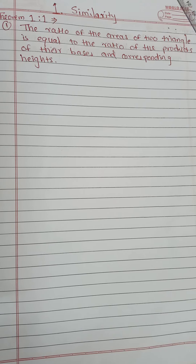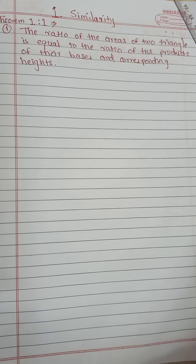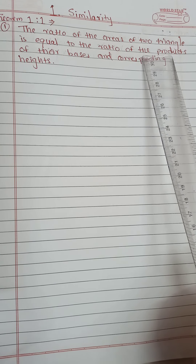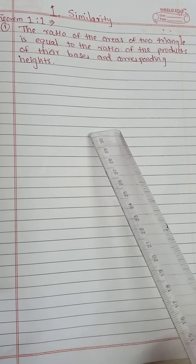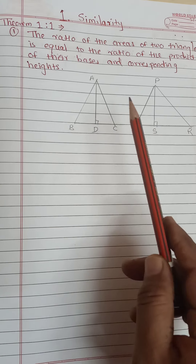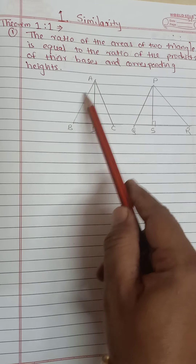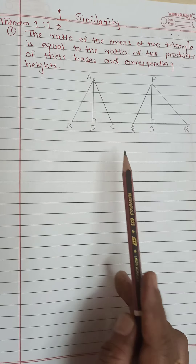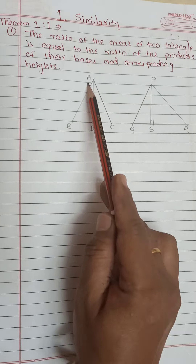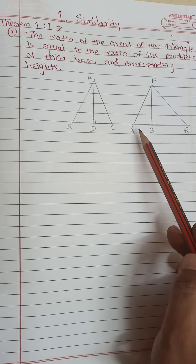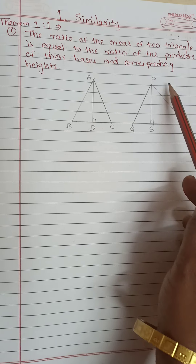Here we have to find out the ratio of the areas of two triangles, so first we will draw two triangles. I have drawn two triangles: triangle ABC and triangle PQR. Triangle ABC has base BC and height AD, and triangle PQR has base QR and height PS.